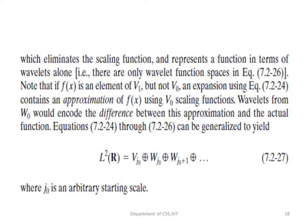We can eliminate scaling functions and keep only wavelet functions, representing f(x) purely in terms of wavelets. If f(x) is an element of V(1) but not V(0), it contains an approximation of f(x) using V(0) scaling functions, and wavelets from W(0) encode the difference between this approximation and the actual function. All these equations can be generalized: L²(R) = V(j₀) ∪ W(j₀) ∪ W(j₀+1) ∪ ..., where j₀ is an arbitrary starting scale.